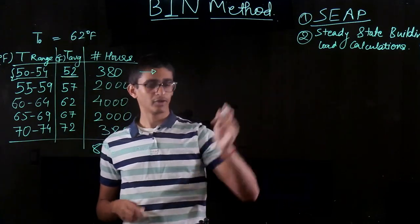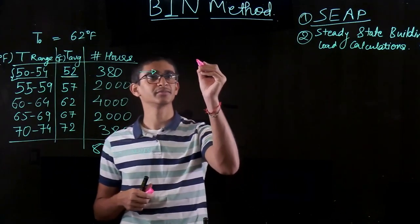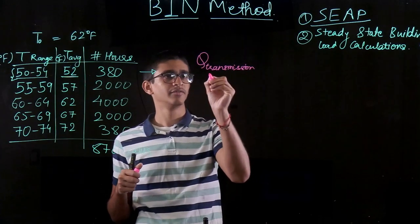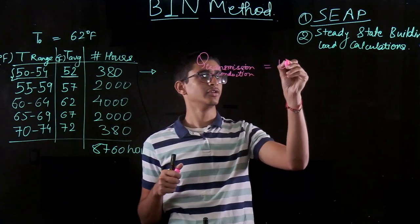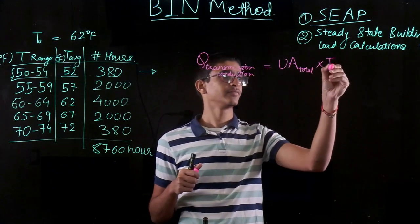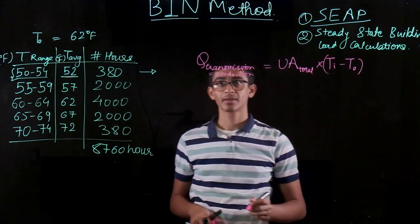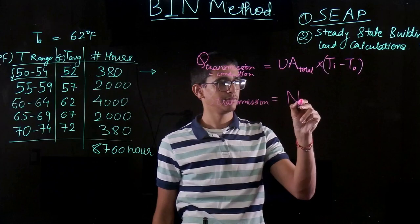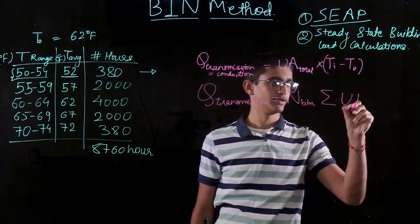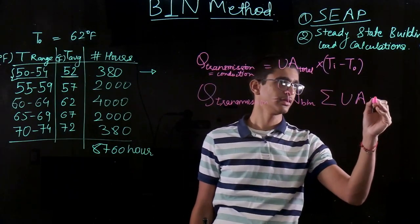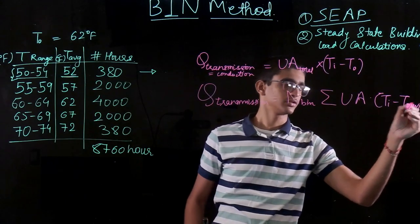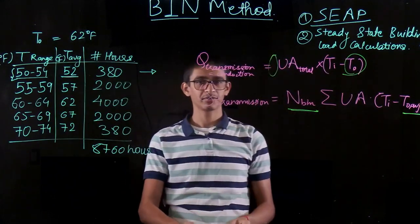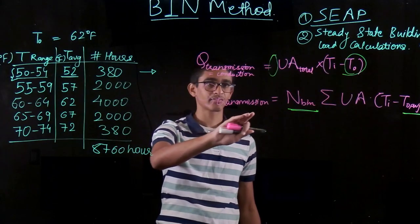The difference in the formula is straightforward. Earlier in steady-state building load calculations, the transmission load due to conduction was: Q = UA_total × (T_in − T_out), where these were average temperatures. But now, in the BIN method, the formula becomes Q_bin = N_bin × UA_total × (T_in − T_out_average), where N_bin is the number of hours in that bin. The key difference is we are taking into account Q for each bin separately using its average outdoor temperature. For each of these bins we separately calculate Q_transmission and add them up, which gives a better overall estimate.